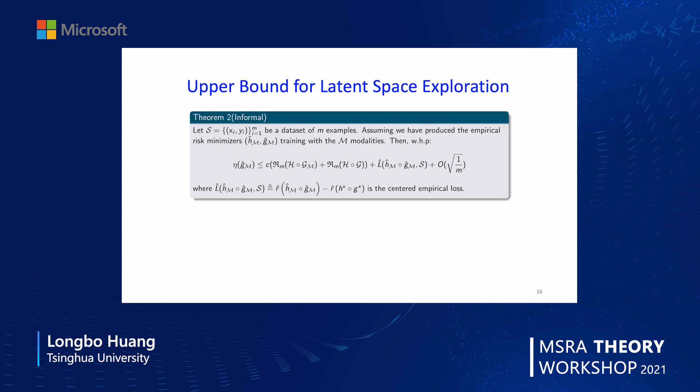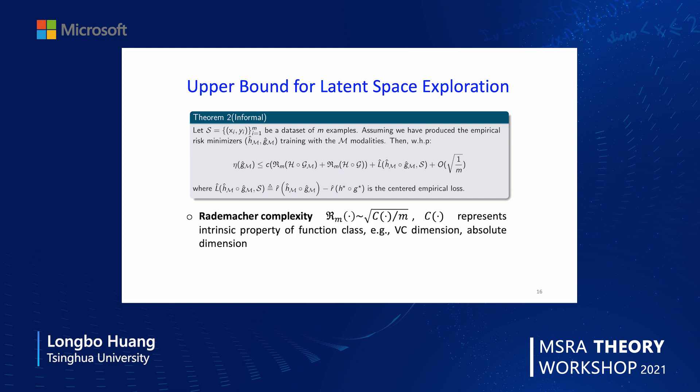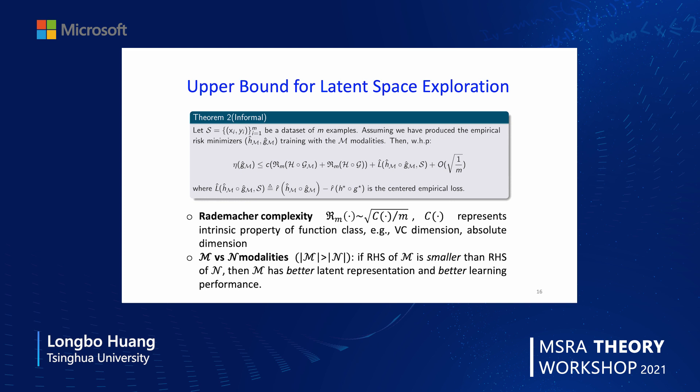Our second result bounds the distance between the learned model and the true mapping. We obtain bounds for the latent representation quality: eta(g, M) is bounded above by a constant times the Rademacher complexity plus the empirical loss plus a term of order 1/sqrt(n). Comparing M versus m modalities, if the right-hand side under M modalities is smaller, then using M gives a better latent representation and better learning performance.